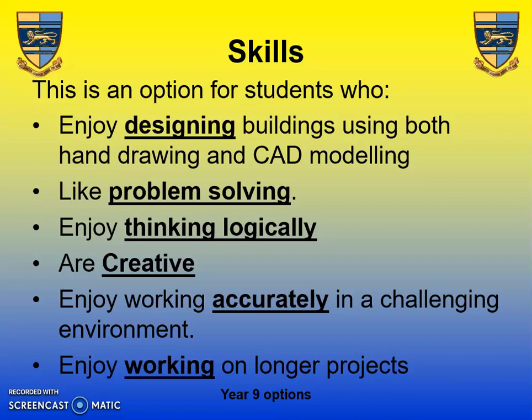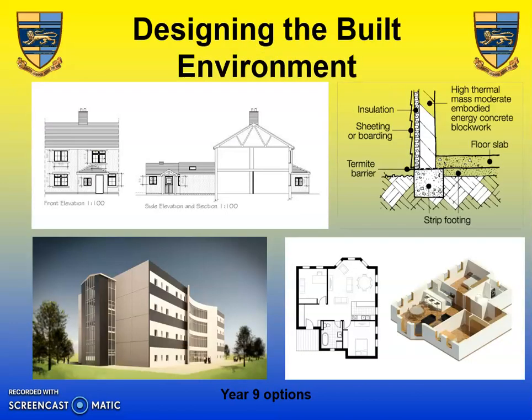You need to work extremely accurately and you will be working on a longer extended project. The first unit on the course revolves around a design brief — you're given a design brief and then you have to come up with a range of hand drawings such as plans, elevations and cross sections, before you then develop that model into a full CAD model using Revit industrial software.